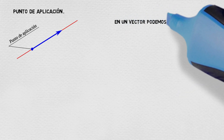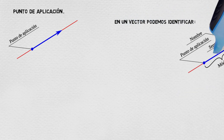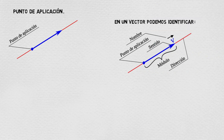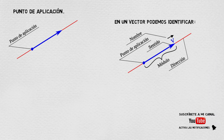In summary, in a vector we can identify: the name, the point of application, the sense, the magnitude, and the direction. And that concludes our video on the introduction to vectors and their characteristics. We hope it was helpful — please subscribe, leave your comments, share, and give it a like. See you in the next video.